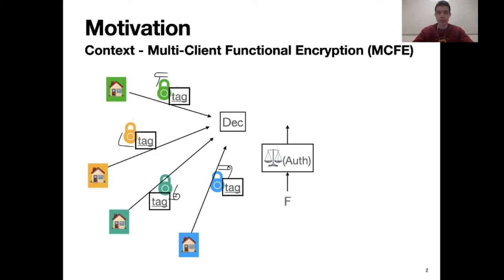Moreover, there exists an authority that, given a functional description, can output a functional decryption key so as to combine the client's ciphertext as long as they are under the same tag and obtain the functional evaluation on the client's combined data. This gives us some kind of control over the information revealed over the plaintext through the functional evaluation.